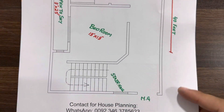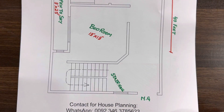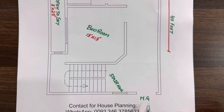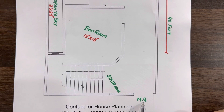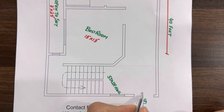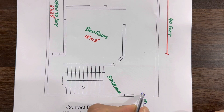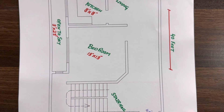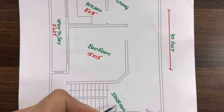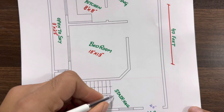The front is located at the north direction, which is the road side. You can see this is the main gate — our main entrance — which has a width of 4.5 feet, or 4 feet 6 inches.